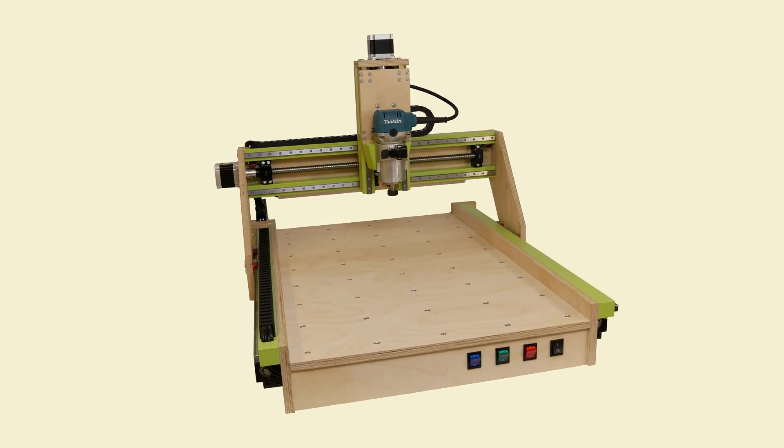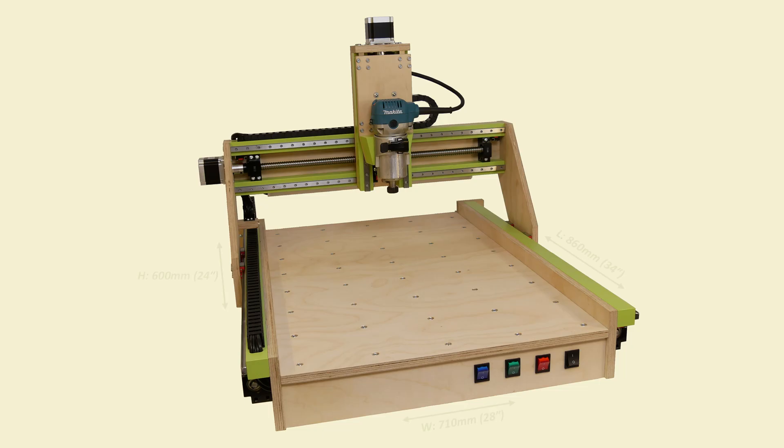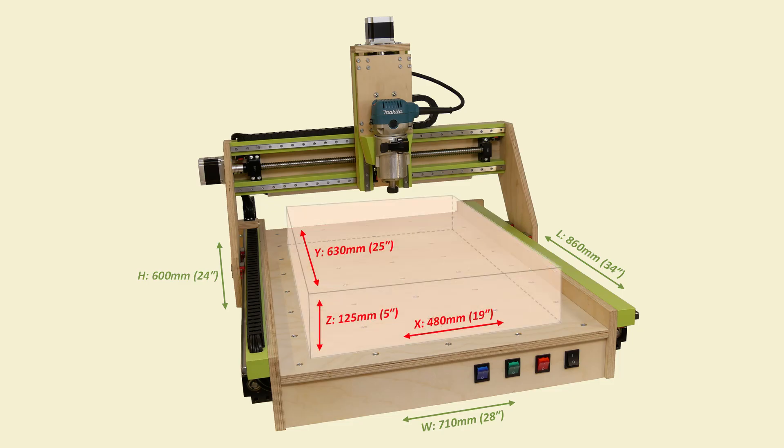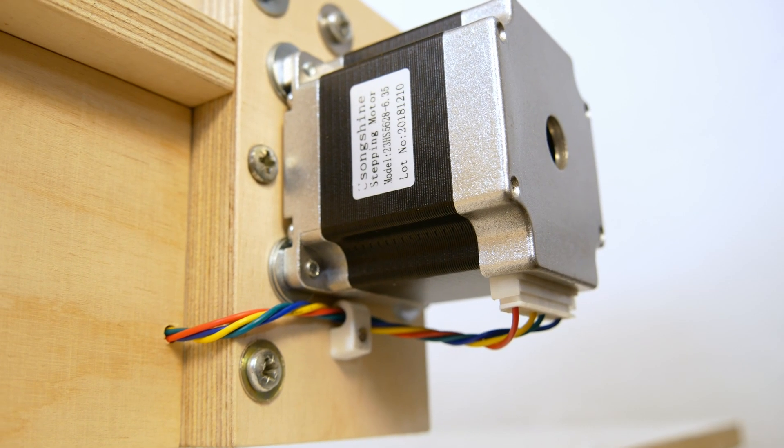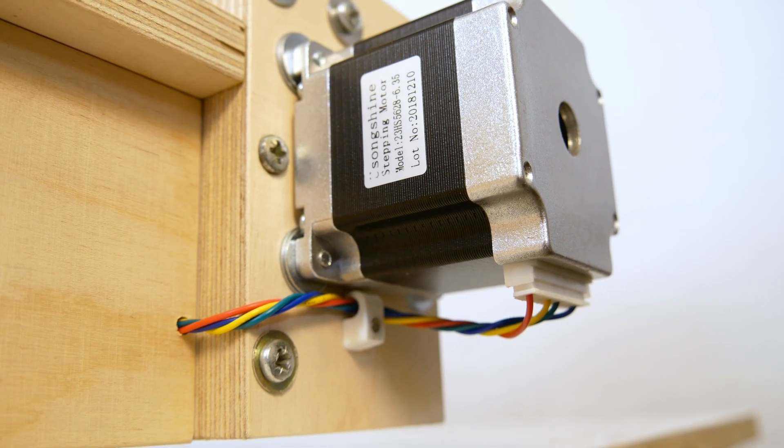The CNC has three axes, is 86 cm long, 71 cm wide and 60 cm tall and has a workable volume of 63 x 48 x 12.5 cm. The machine is driven by four NEMA23 stepper motors, one each for the X and Z axis and two for the Y axis.